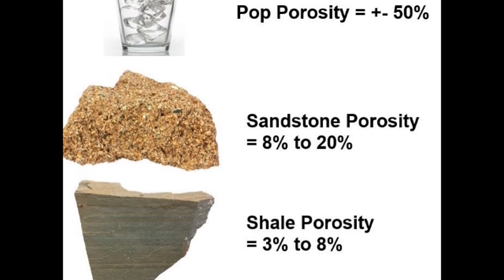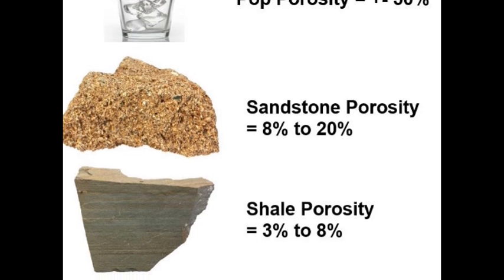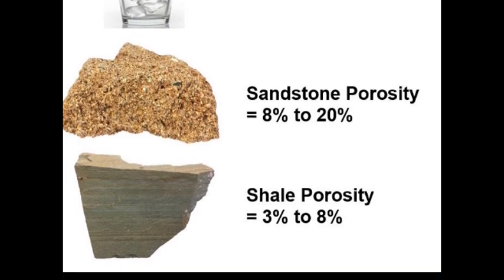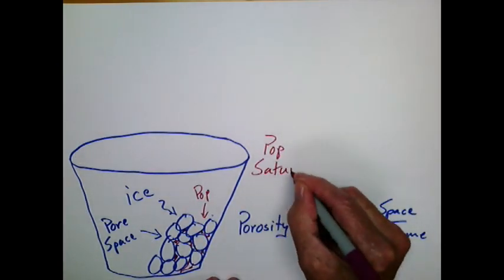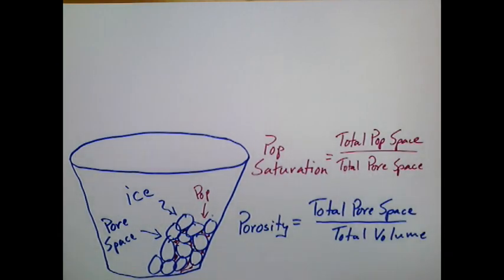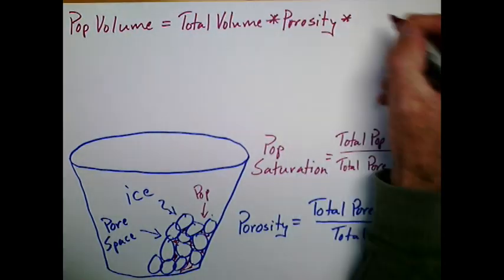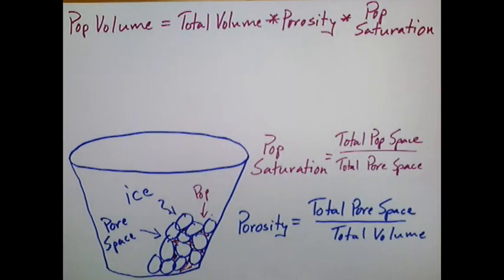That doesn't sound like much, but a 100 foot thick sand or shale that covers miles and miles can hold a lot of oil. As I said, a portion of the pore space is filled with soda pop and a portion with water. The volume of pore space that is filled up with pop instead of water is called the pop saturation. So we multiply the porosity and the saturation into the volumetric equation to calculate our true pop volume.